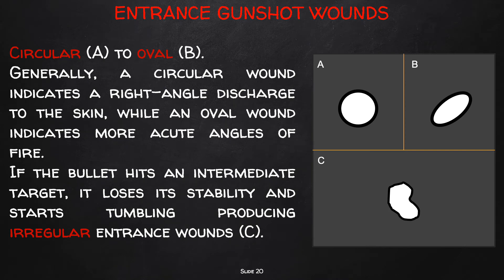Entrance wounds can be classified as gunshot wounds from any range that create circular to oval or even irregular-shaped defects. A circular gunshot wound indicates a right-angle discharge to the skin, while an oval shape indicates a more acute angle of discharge. If the bullet hits an intermediate target, it loses stability, starts tumbling, and can produce an irregular gunshot wound of entrance. Figure A shows a circular-shaped entrance wound, figure B shows an oval shape, and figure C shows an irregular entrance wound.